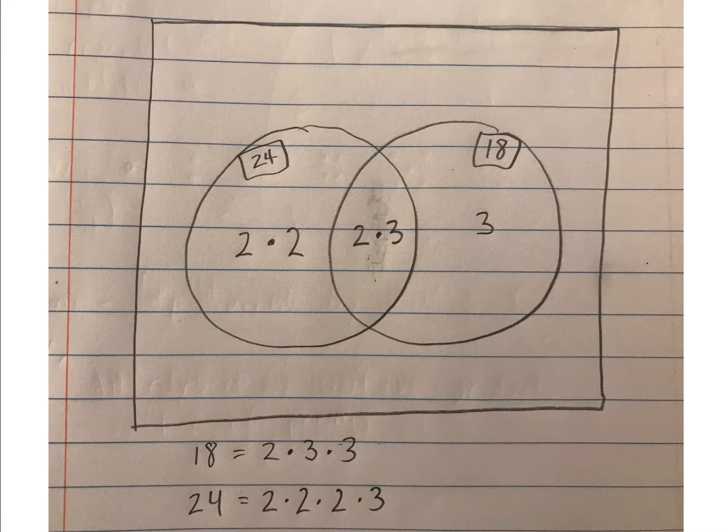In the 18 circle we can see 2, we can see 3, there's no 4 because you need two 2s. There's no 5, there's a 6, no 7, no 8, there's a 9, and finally there would be an 18 combining them all together.